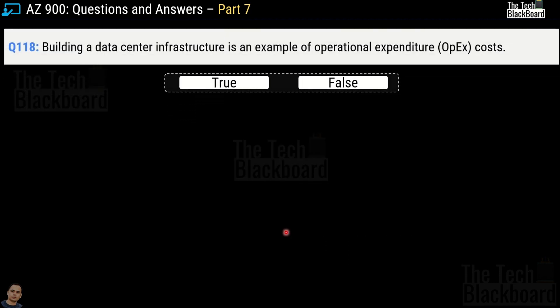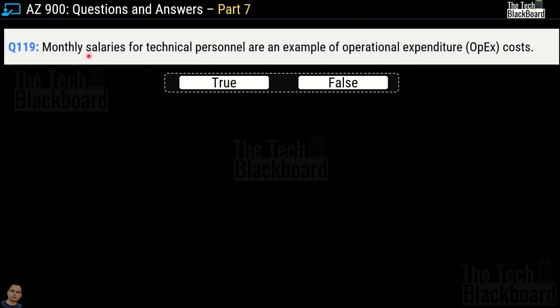Question number 118: Building a data center infrastructure is an example of operational expenditure or OpEx cost — true or false? This is a false statement. Building a data center infrastructure is a capital expenditure (CapEx), not operational expenditure. Question number 119: Monthly salaries of technical personnel are an example of operational cost — true or false? This is a true statement. Monthly salaries are recurring costs and are categorized as operational expenditure.